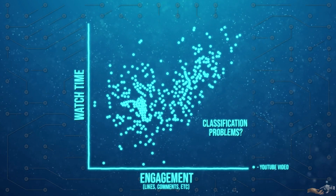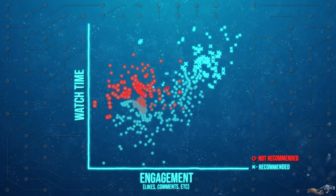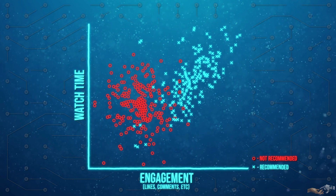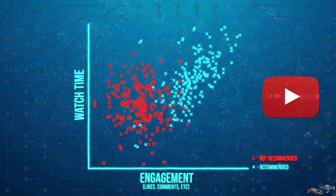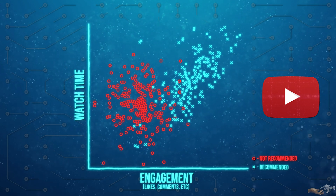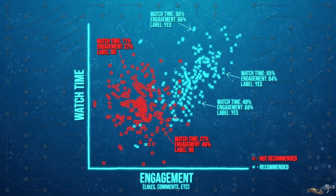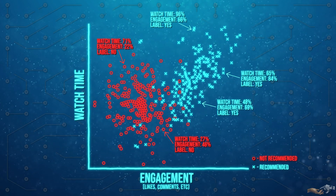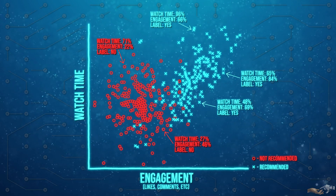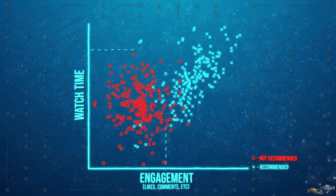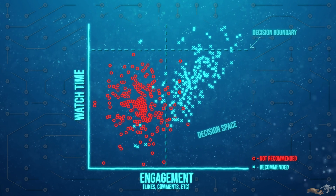To view classification, let's expand our example. Along with tracking the watch time and engagement of select videos, we will also record if the video is recommended or not — in other words, we are trying to determine the value of the variables the YouTube algorithm uses to recommend videos. Our original data points have now been given labels, what is referred to as labeled data. Once data has been given labels, we can proceed in classifying the output label of the data based on input variables. Similar to regression, we want to draw lines of best fit to divide up our decision space. These lines define what is known as decision boundaries.